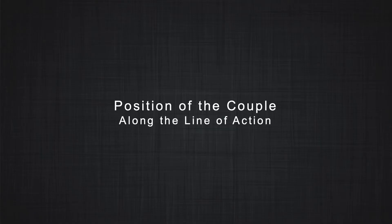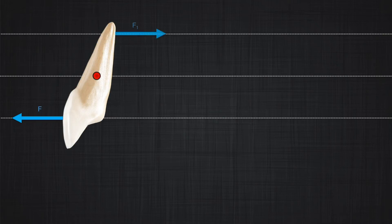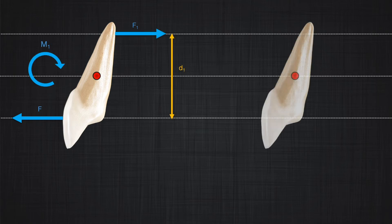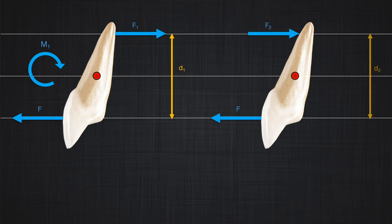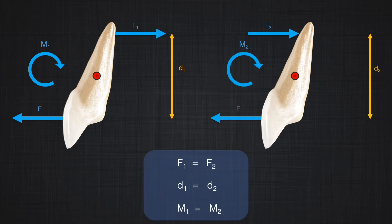Another aspect of the couple is that we can move the forces along the line of action and have the same effect. For example, if we apply F1 and F2 to a tooth on both sides, and then move F2 around the line of action so both forces are on the same side of the tooth, we still have a couple. Movement of forces along the line of action does not change the result — you will produce the same moment.